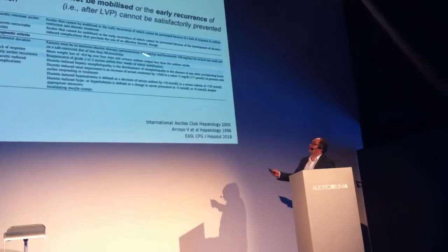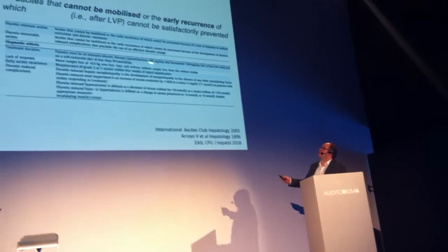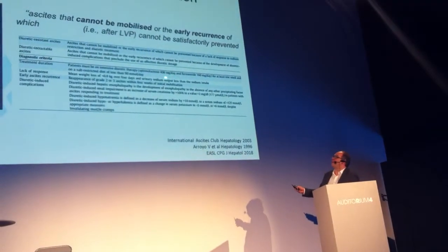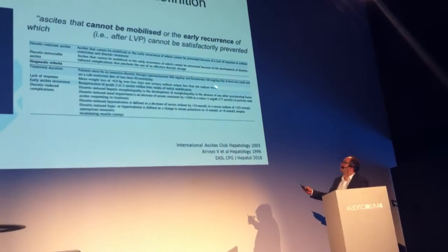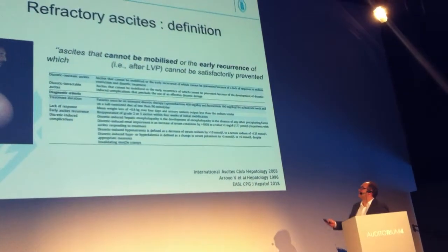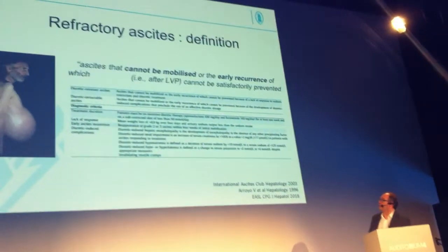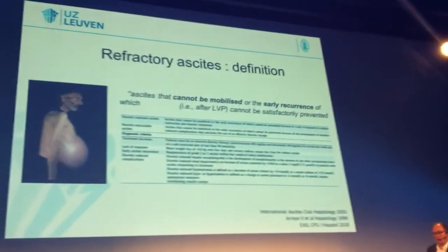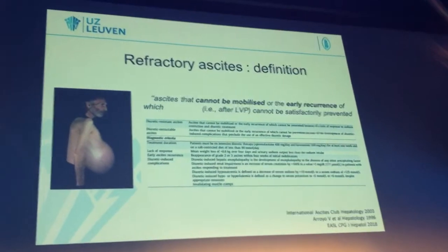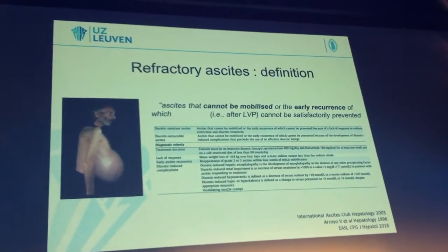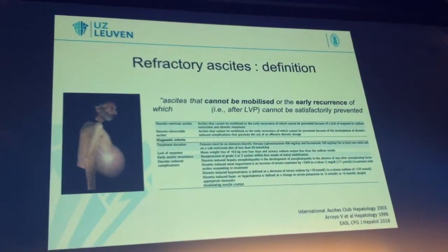Diuretic-resistant ascites is defined by a maximum dose of spironolactone 400 mg and furosemide 160 mg, which is quite a lot. Personally, I must say that I never get to that extent.